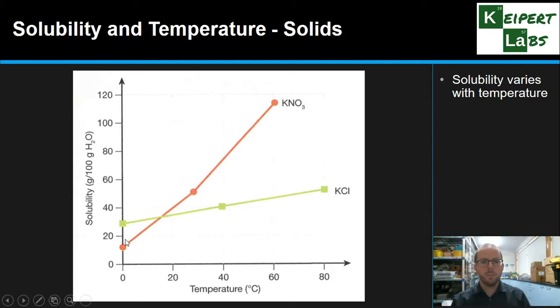You can see that of these two compounds, the potassium nitrate KNO3 varies in solubility much more than potassium chloride KCl. If you look up solubility curves, you can see a whole range of different variations in solubility with different compounds. Sometimes they're a straight line. Sometimes they're a curve. Sometimes they increase. Sometimes they decrease.